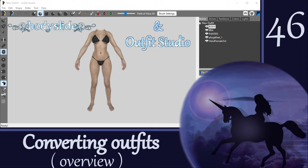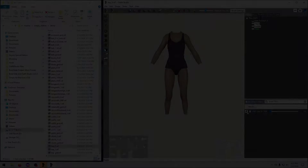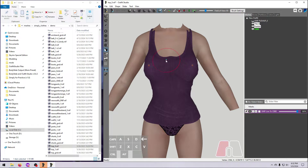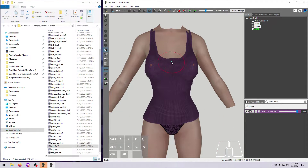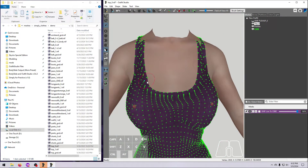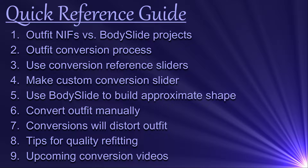Hi everyone! After more than 40 episodes in this series, we are finally ready to tackle outfit conversions — taking an outfit made for one type of body and refitting it to a different type of body. For example, making a UNP outfit into a CBBE outfit. In this overview video, I'll explain the process, four different approaches for refitting the outfit to a new body, discuss how this can distort your outfit, give you some high-level tips, and then end with a list of the upcoming videos.